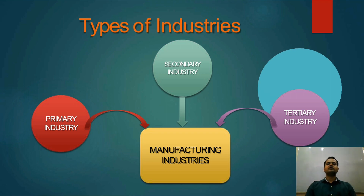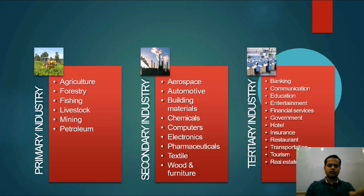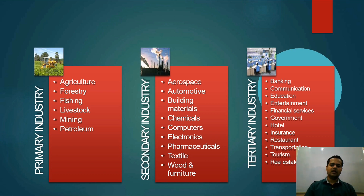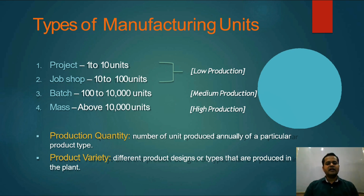The first type of industry is primary — when it comes to agriculture and basic industries like mining and petroleum. The second is secondary — when it comes to products like aerospace, automotive, buildings, computers, and electronic items. The third is the service sector like banking, communication, education, and entertainment. This third type is called the tertiary industry.